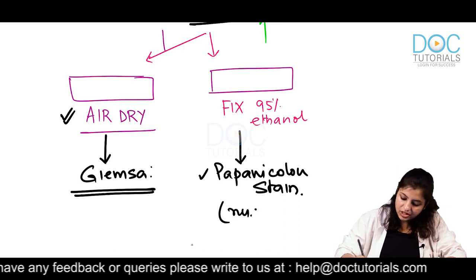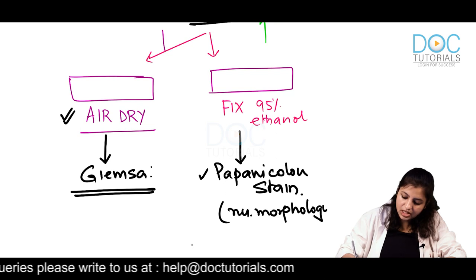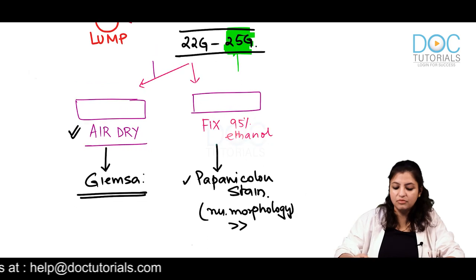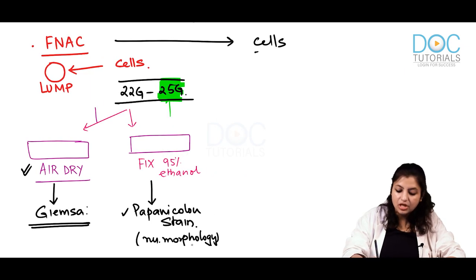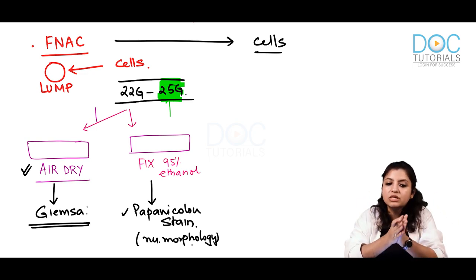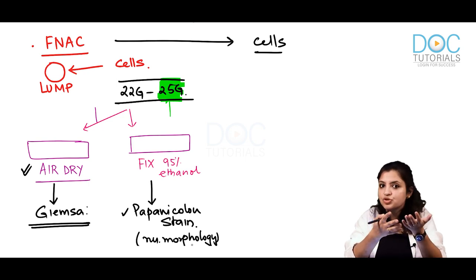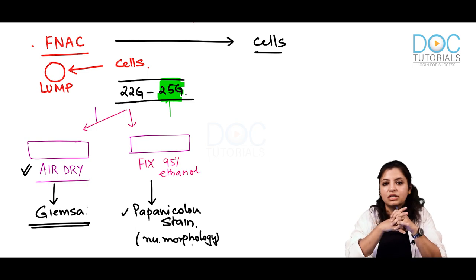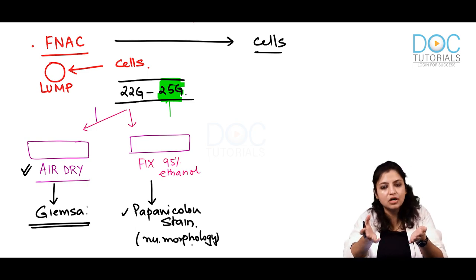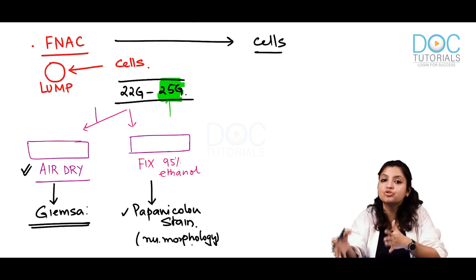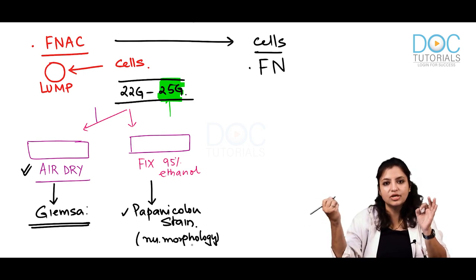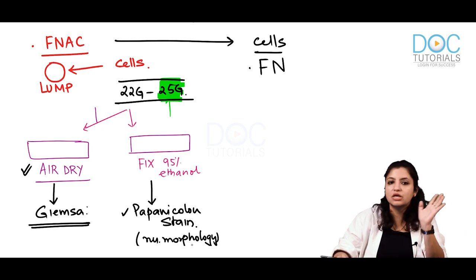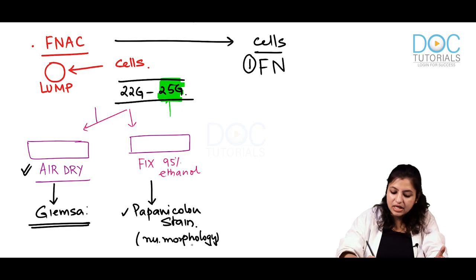Nuclear morphology is better preserved with Papanicolaou stain, so we prefer it for seeing nuclear morphology better. Now, the problem with FNAC is that you are only aspirating cells, so the 3D orientation of cells with stroma is not visible. For tumors where it is mandatory to see stromal invasion or capsular invasion, FNAC will not be very helpful. For example, you cannot differentiate follicular adenoma from follicular carcinoma on FNAC slides, because that requires seeing vascular and capsular invasion. Such cases are reported as follicular neoplasms on cytology, and confirmatory diagnosis is done on biopsy.